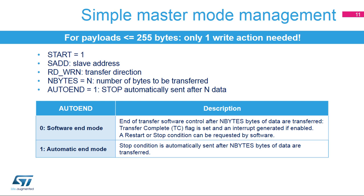Master mode software management is very simple; only one write action is needed to handle a master transfer with a payload smaller than 255 bytes, and the full protocol is managed by hardware. I2C control register 2 must be written with the start condition request, slave address, transfer direction, number of bytes to be transferred, and end of transfer mode. If the auto end bit is set, the stop condition is automatically sent after the programmed number of bytes is transferred. If not, the end of transfer is managed by software: the TC flag is set and an interrupt is generated, after which a repeated start or stop condition can be requested by software.